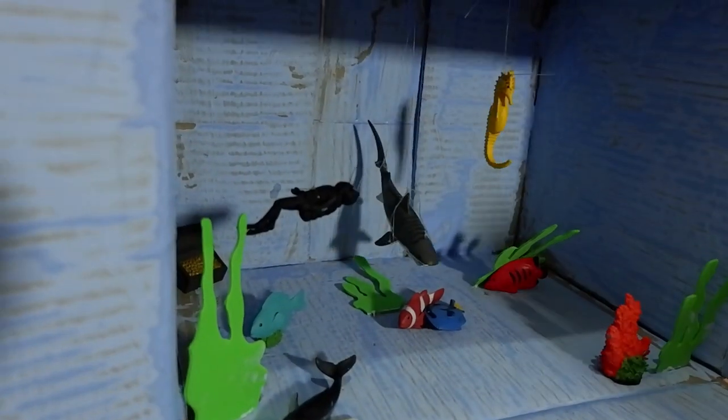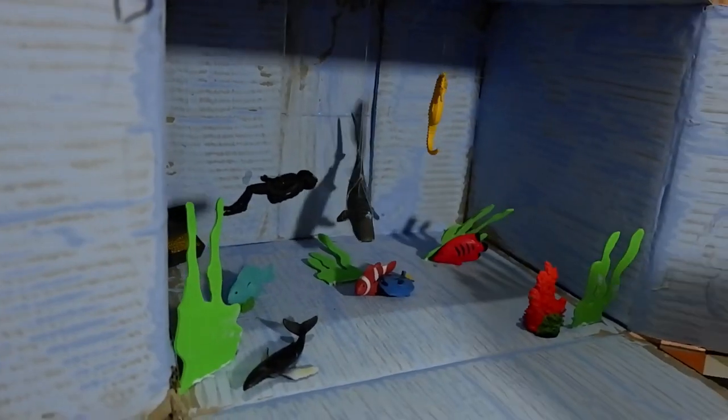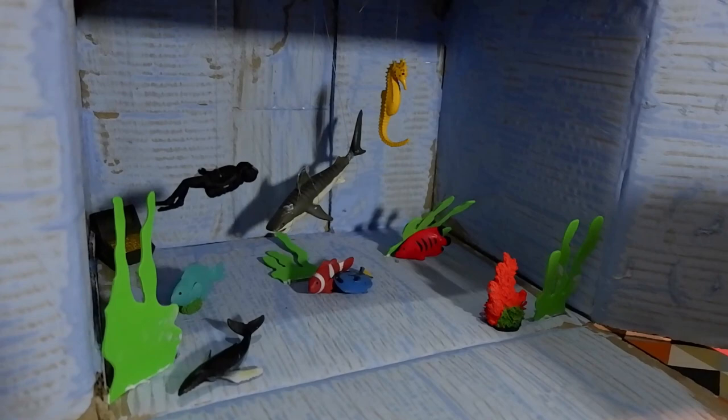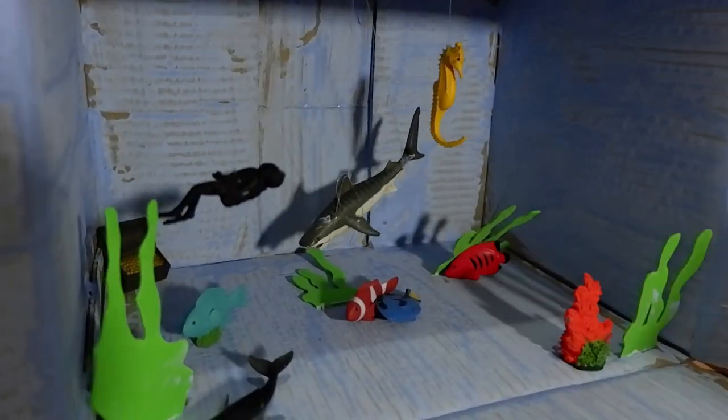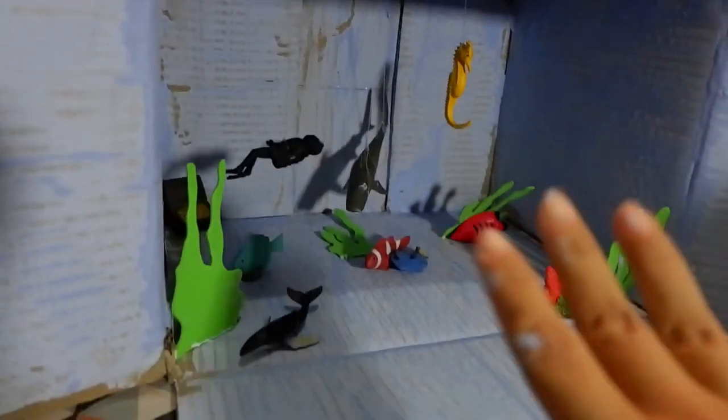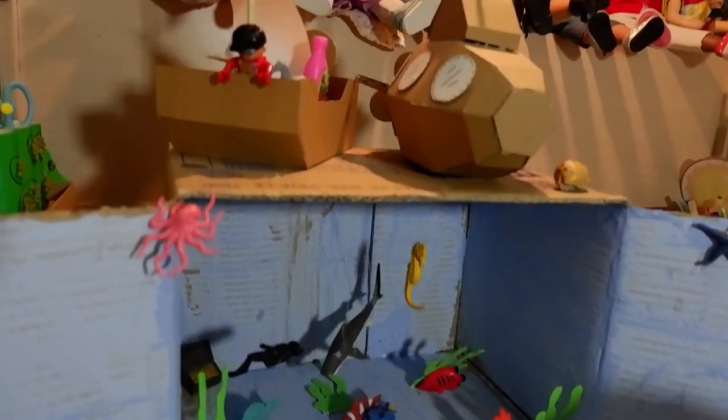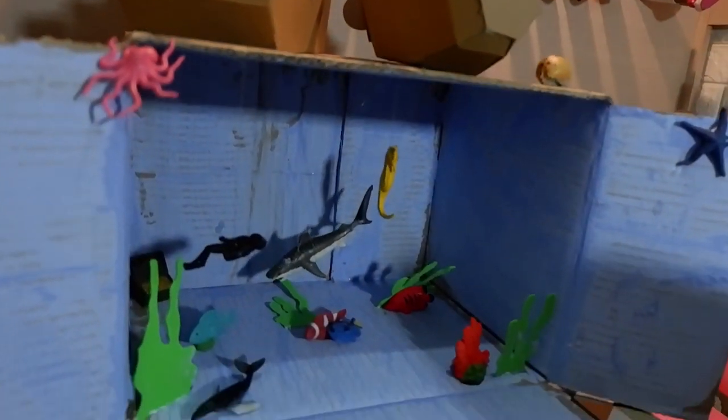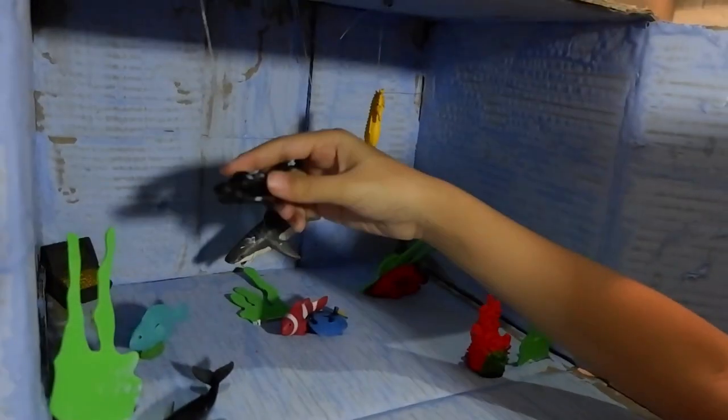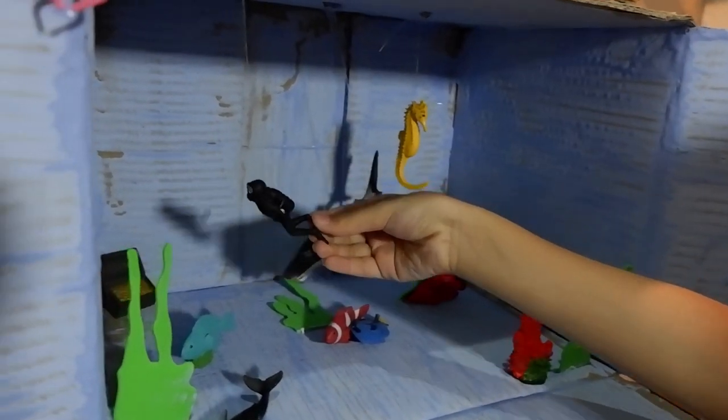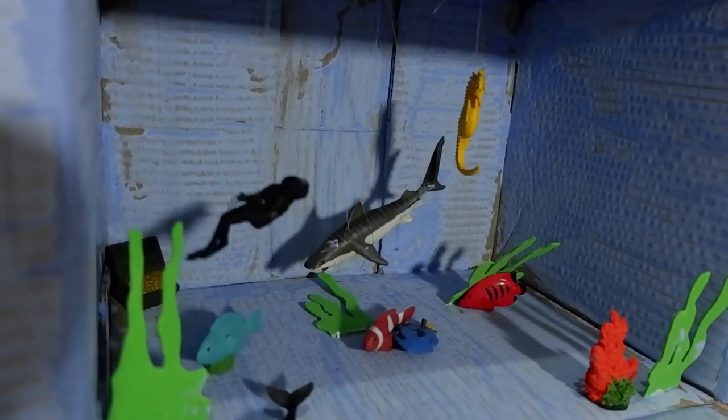This diorama is made from recycled cardboard that we decorated. This is an underwater scene. When people go underwater, they usually need to use oxygen because there's no air underwater, just like in the ocean.